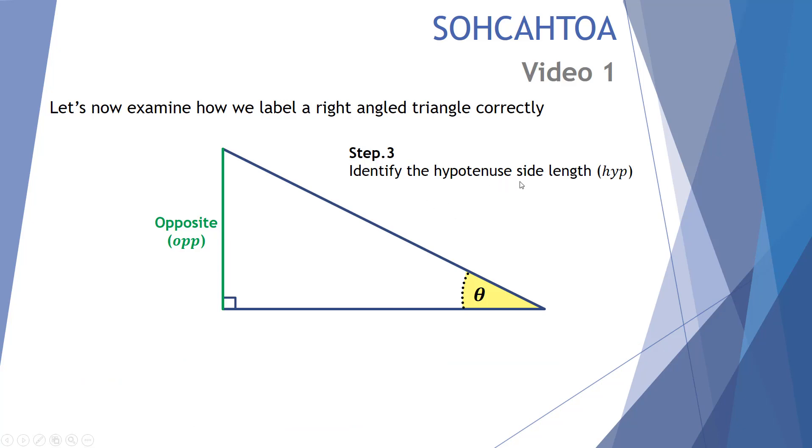Number three: identify the hypotenuse side length. This is probably the easiest of all side lengths to identify because we are looking for the longest diagonal section. This is always going to be the longest side of a right angle triangle. So here's our hypotenuse.